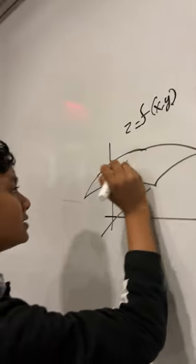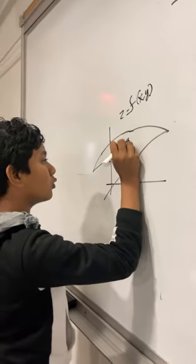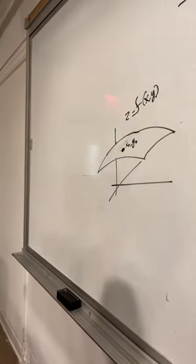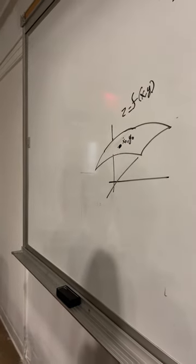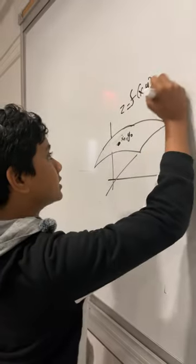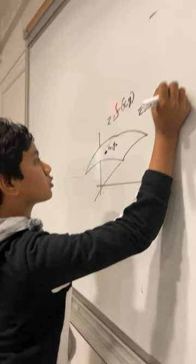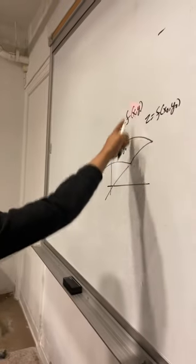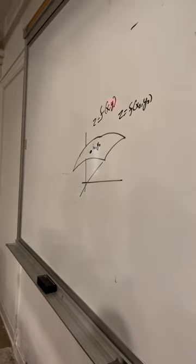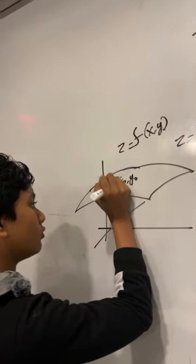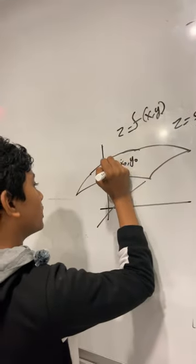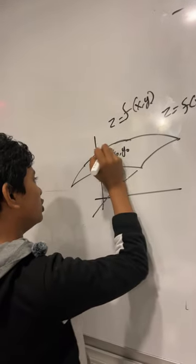And if we take this point with x and y coordinates x naught, y naught, such that a z coordinate is f of x naught, y naught, or in other words it falls into the domain of x, y. And we have some random unit vector with x and y components that I'll call u.